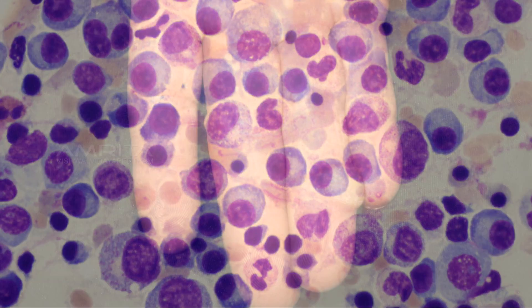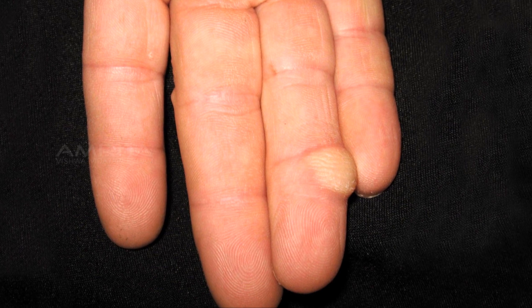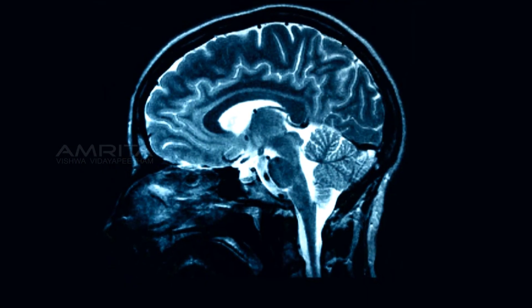The failure of cells to migrate or migration of cells to inappropriate locations can result in life-threatening consequences such as the congenital defects of the brain.